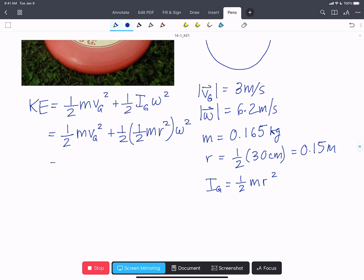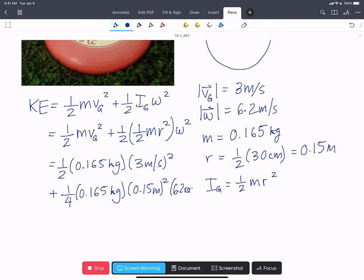So we're going to plug in the numbers now. We've got one-half times 0.165 kilograms times 3 meters per second all squared, plus one-quarter times 0.165 kilograms times 0.15 meters squared, times 6.2 radians per second all squared.